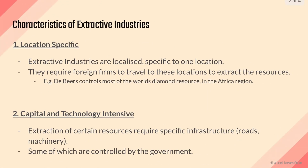So what are some characteristics of extractive industries? Essentially, extractive industries are industries that are heavily involved in resources — things like minerals, mining, and extraction of materials. First of all, naturally they're going to have to be very specific in terms of location.